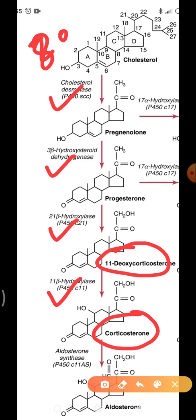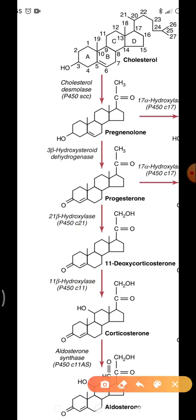Corticosterone changes into aldosterone by the enzyme aldosterone synthase, and this enzyme is only present in zona glomerulosa. So the conclusion is that aldosterone is formed from cholesterol, and the potent mineralocorticoids in this pathway are aldosterone and 11-deoxycorticosterone.